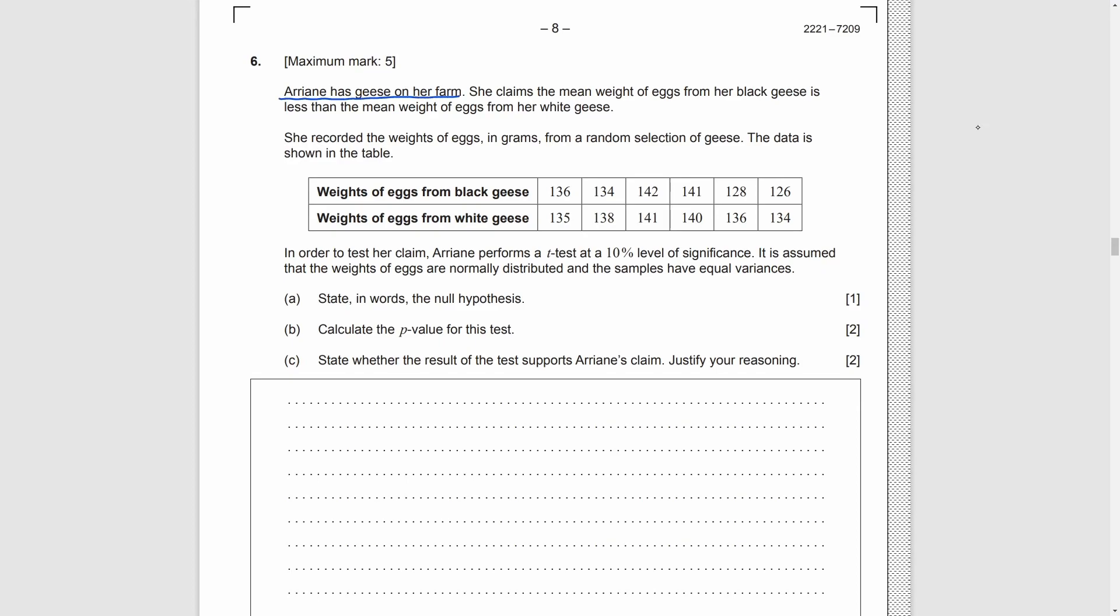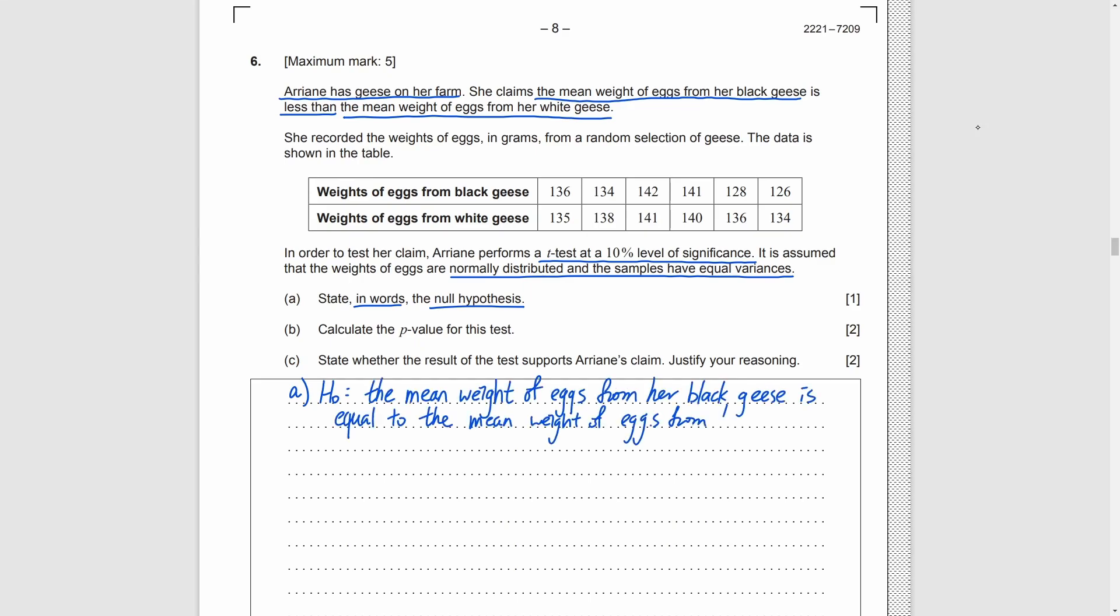Question 6. A girl who has a farm. She said, the mean rate of eggs of the black geese is less than that of the white geese. Given the data, she wants to have a t-test with 10% level of significance. Part A, we need to write the null hypothesis in words. Opposite to what she said, H0 is just that the mean rate of the two groups of eggs are the same. Part B, just by calculator, we can get p-value 0.177. Part C, as 0.177 is greater than 10%, we cannot reject the null hypothesis. Her claim is not supported by the evidence.